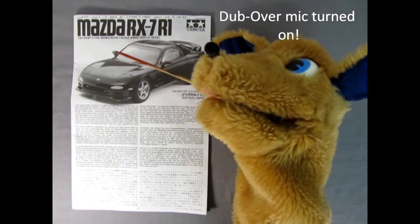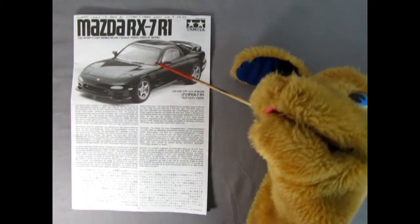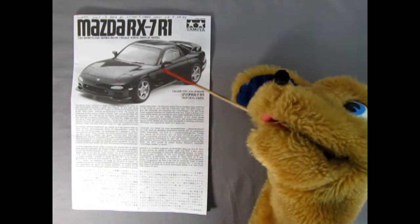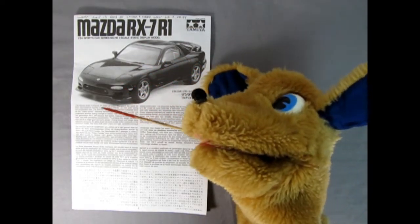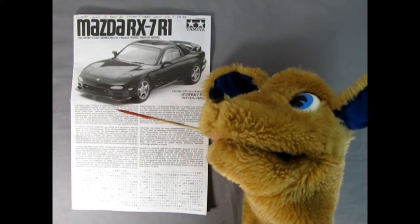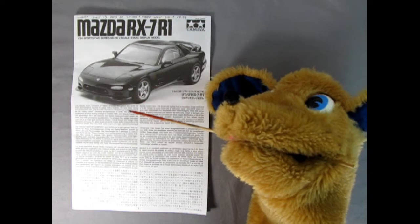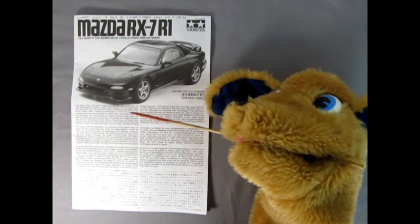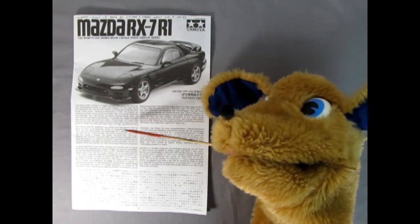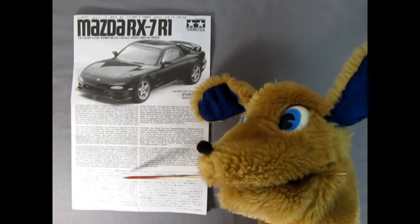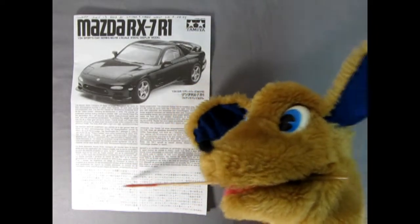Here we have the Mazda RX-7 R1. And as you can see you've got the wonderful photo of the built-up model down here. And then you've got a wonderful write-up about the Mazda Motor Company and all their history and the history of this car. It says it came out in October 1991. And then here we got it in German and in French I believe. And then in Chinese or Japanese down here.